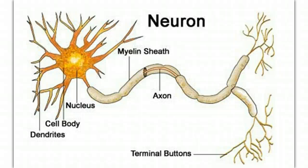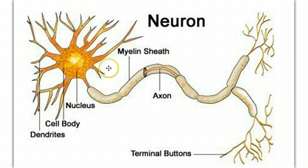Neurons are cells that are unique to the nervous system. They have the special ability to generate and propagate electrical impulses called action potentials. These electrical events occur across the cell membrane of a neuron. So before we can get to the details of an action potential, we need to remind ourselves of the properties and structures of the cell membrane.